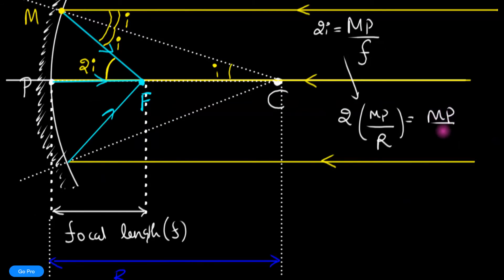Therefore, this is mp divided by f. There we have it. We can see from this: 2 by r equals 1 over f, or this tells us that f equals r divided by 2. That's the relationship between the focal length and the radius of curvature.